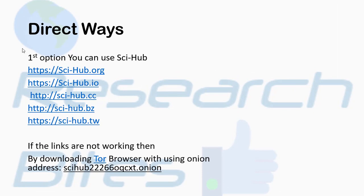Let me move towards the direct methods first. The most important direct method — most of us know Sci-Hub. Since around 2015 onwards, there are several links: sci-hub.org was working at the very start, then .io, then .cc, then .bv, then .tw. These are some links through which we can access Sci-Hub. If we are not getting direct access to Sci-Hub...